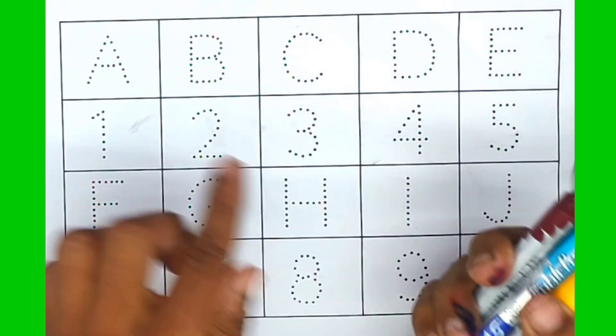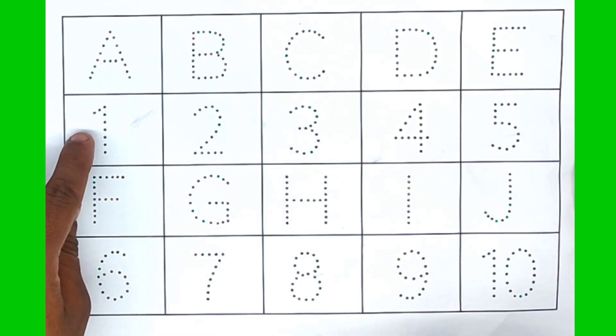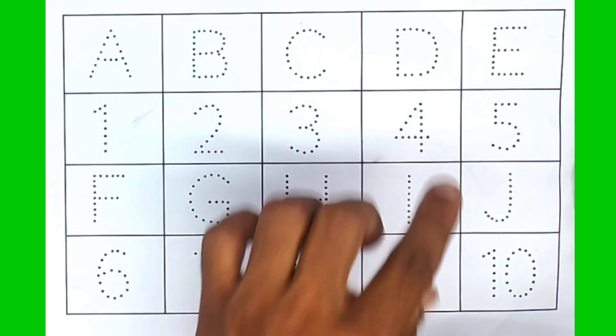Today learn alphabet: A, B, C, D. Learn counting number: 1, 2, 3, 4.